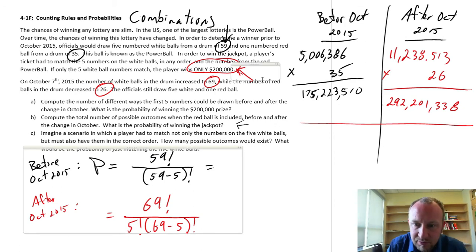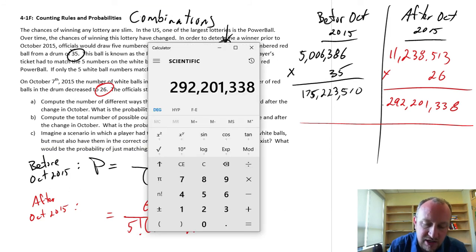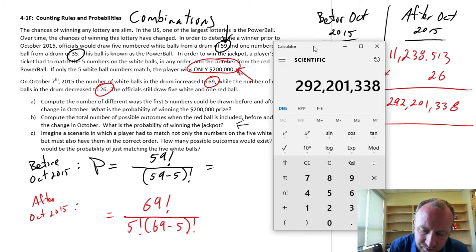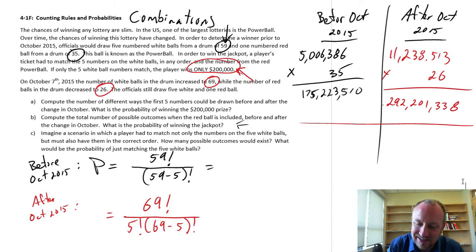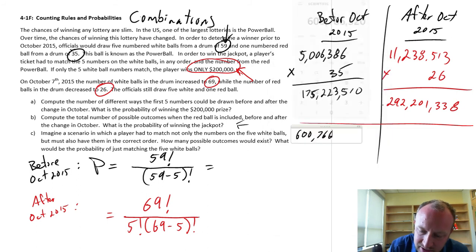So now the number of permutations before the change in October, 59 factorial divided by 54 factorial, 600,766,320.